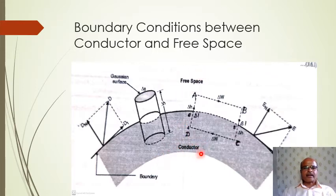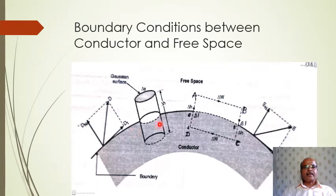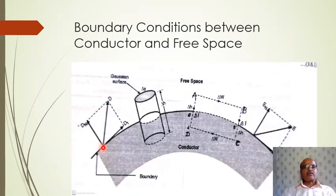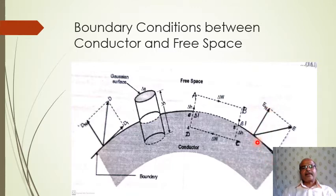Here some components are labeled: DN, DT, EN, ET. D is the electric flux density. DN denotes the normal component of electric flux density and DT denotes the tangential component. EN denotes the normal component of electric field intensity and ET denotes the tangential component.